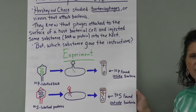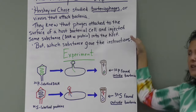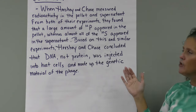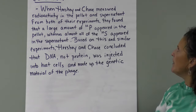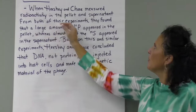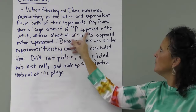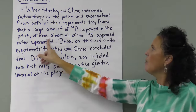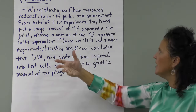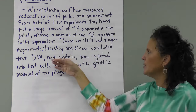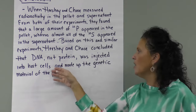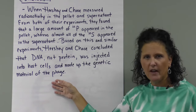This showed that the DNA was carried straight into the host cell while the protein coat was sloughed off. When they measured the radioactivity, the large amount of 32-phosphorus appeared in the pellet inside the cells, while all of the 35-sulfur appeared in the liquid outside. Based on this, they concluded that DNA, not protein, was injected into host cells and made up the genetic material of the phage.